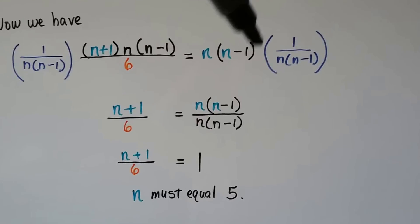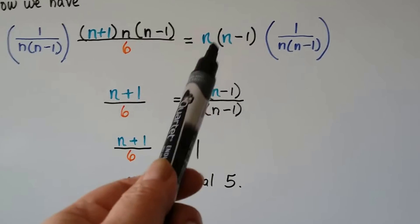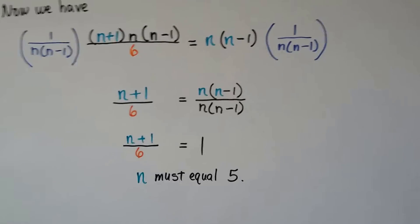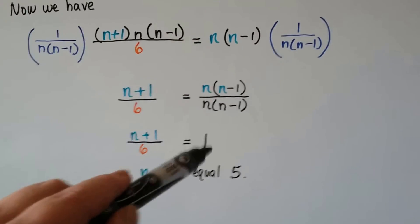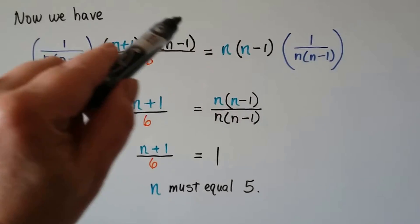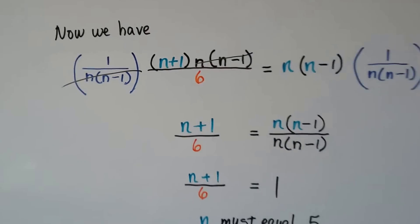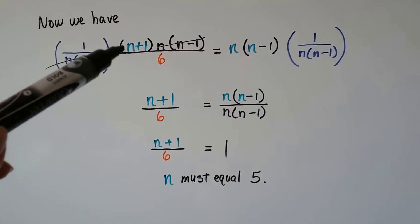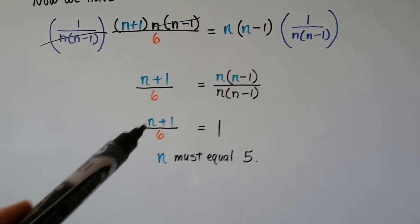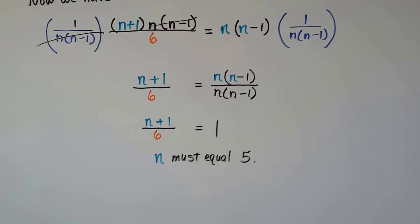Using basic algebra, we multiply both sides by the reciprocal 1 over n times n minus 1. On the right side we get 1. On the left side, n times n minus 1 cancels out, leaving n plus 1 divided by 6. If this equals 1, then n plus 1 over 6 equals 1, so n plus 1 must be 6, which means n must equal 5.